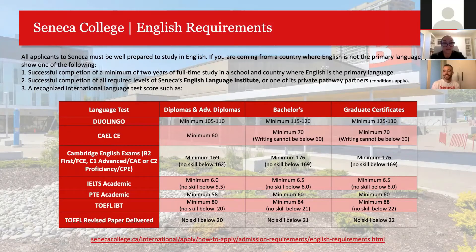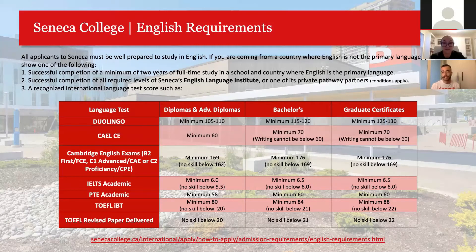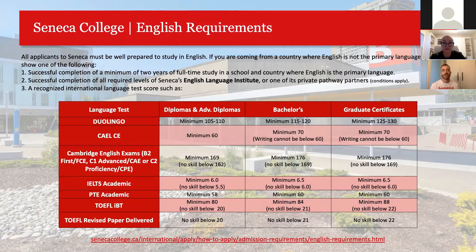For English requirements, we accept a variety of English language proficiency tests. Depending on the type of program you want to apply to, there will be a minimum score required. During COVID-19, the Duolingo English Test became extremely popular with our students because IELTS and TOEFL centers were closed. It's a great option if you don't have available testing sites — you can do it from home, results are quick, and we can admit you based on those scores.